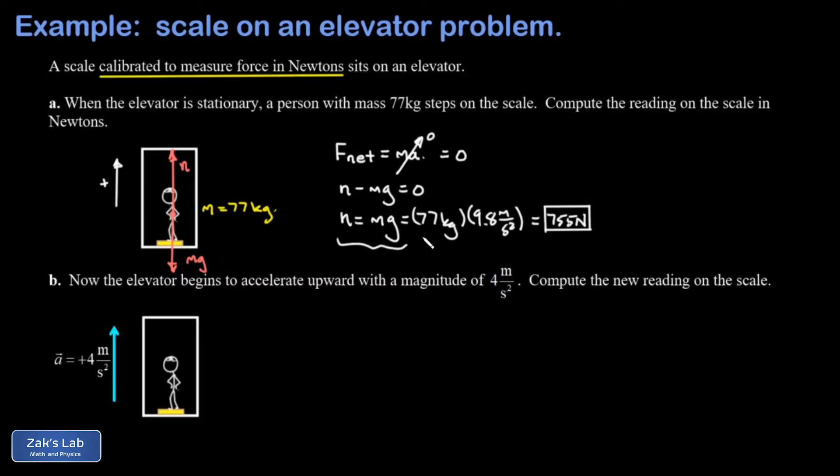So let's take a look at part b. Now the elevator is accelerating upward, and this means the net force on this person must actually be upward in order to cause an upward acceleration on them.